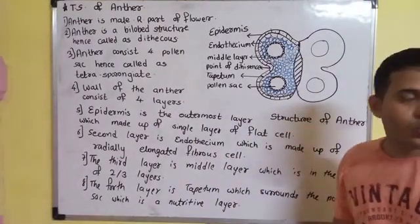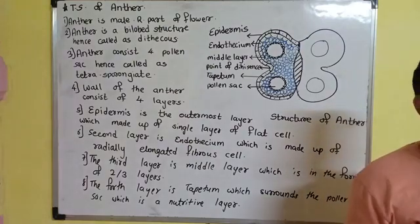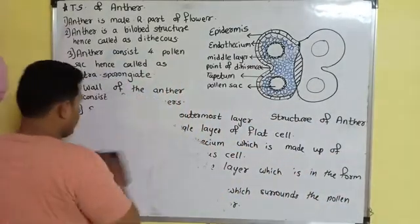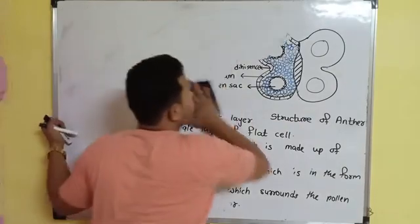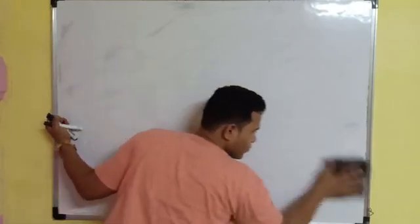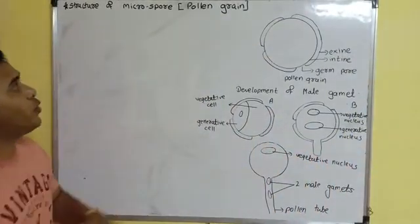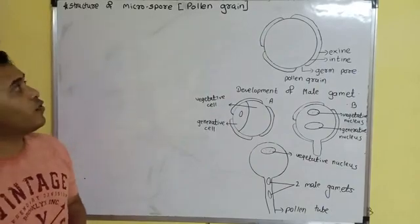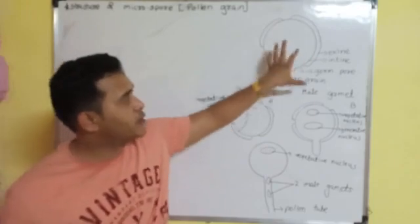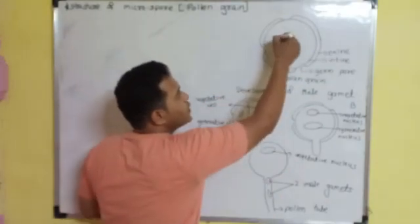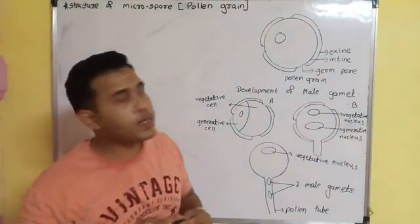After studying the anther, we are now going to study the structure of the male gamete — the pollen grain. We are going to study the structure of the microspore, that is the structure of the pollen grain. This diagram is of a pollen grain, and you can clearly see that there is a nucleus.